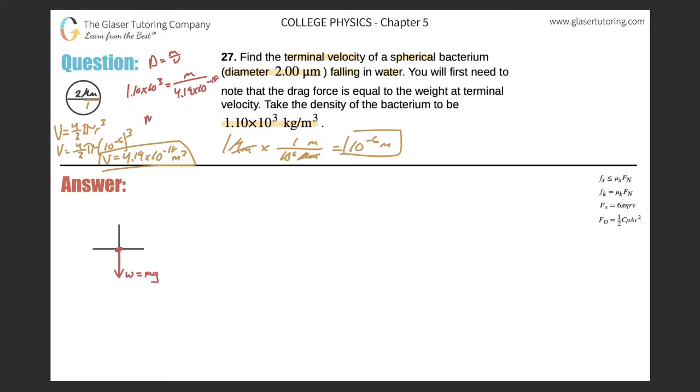Just cross multiply. So the mass is, I'm going to get a value of 1.1 times 10 to the third times 4.19 times 10 to the negative 18. We get 4.61 times 10 to the negative 15, and that is in kilograms. So that is the mass.